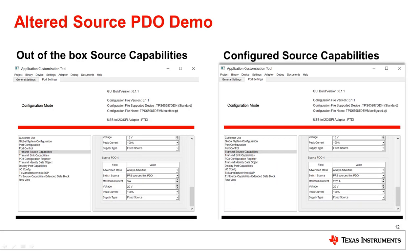For our next demo, we will change the source PDOs on the EVM by using the TPS6598X application customization GUI tool. The GUI tool allows you to reflash your board to configure it to your design. You can see a link to the GUI tool page in the description below. Here, I used the GUI to change the TX source capabilities registers to change the PDO from 20 volts at 3 amps to 20 volts at 2.25 amps and then reflash the EVM.